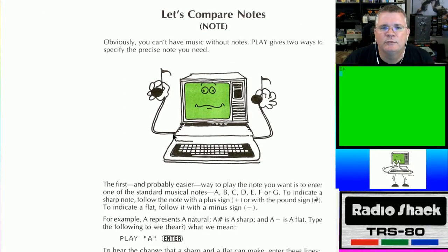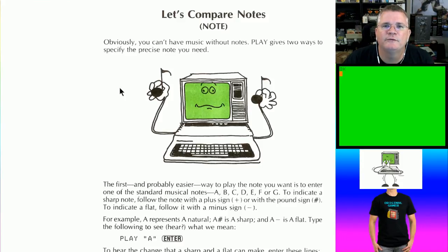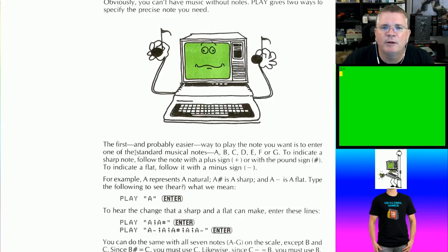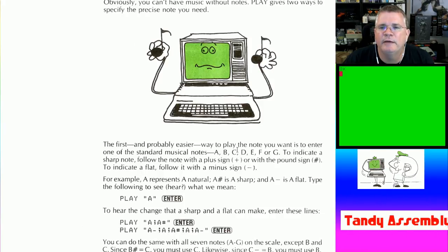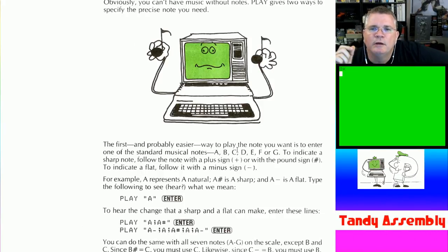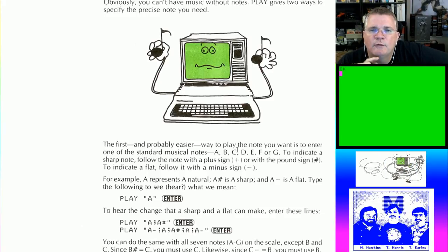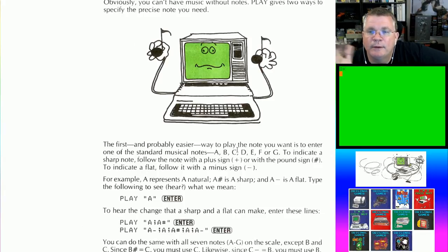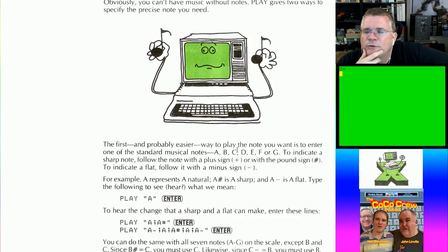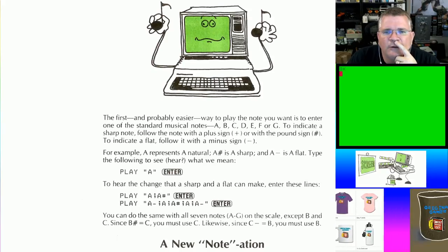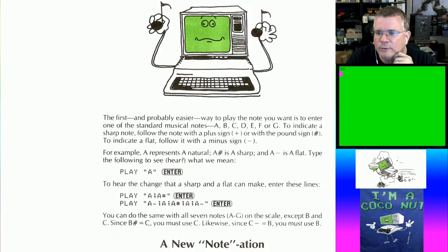The chapter breaks us through more of the syntax. It says play gives you two ways to specify the precise note: the first is to enter one of the standard musical notes A, B, C, D, E, F, or G. To indicate a sharp note, follow it with a plus sign or pound sign — so C-pound is C sharp. To indicate a flat, use a minus sign. So you could play A and A sharp.